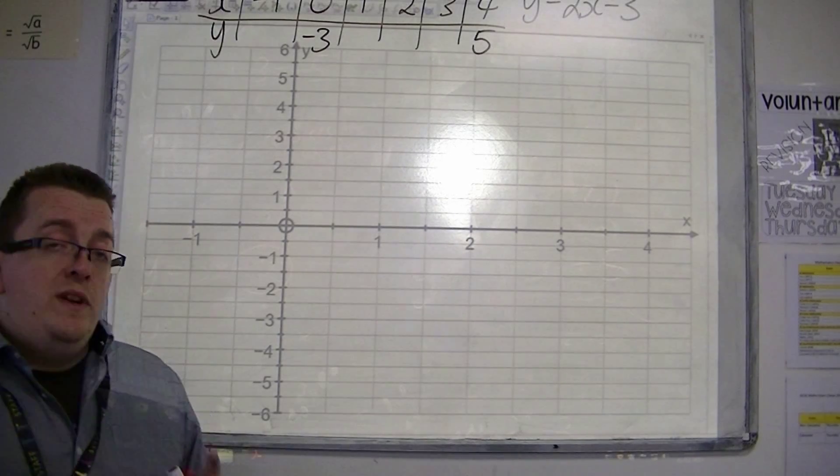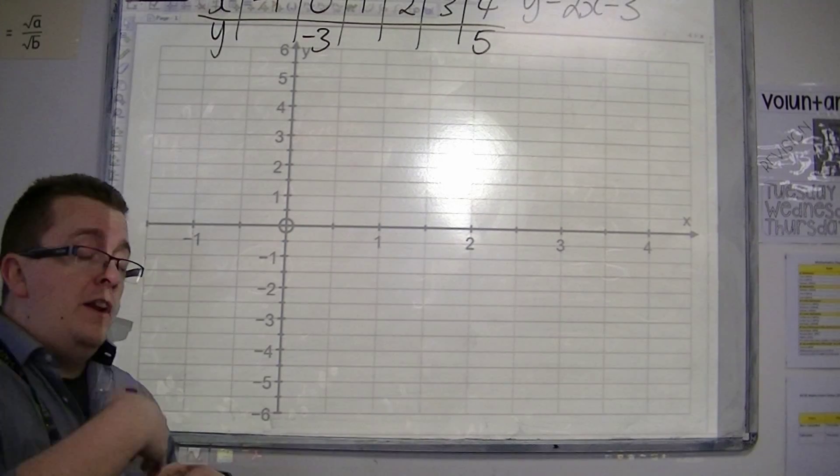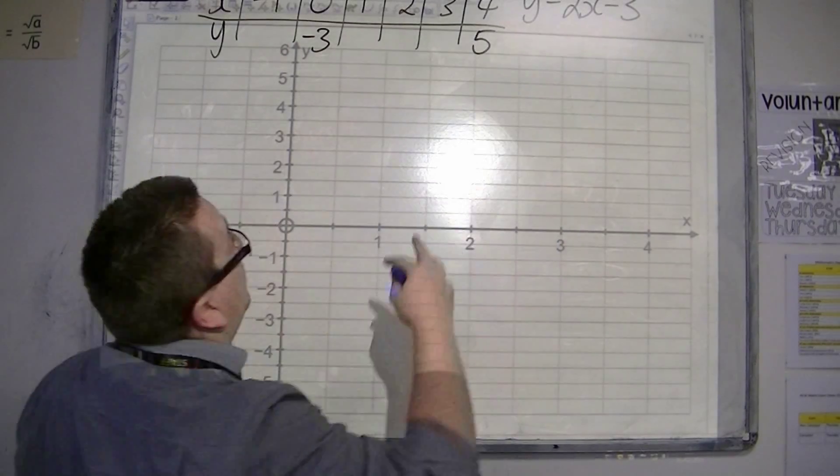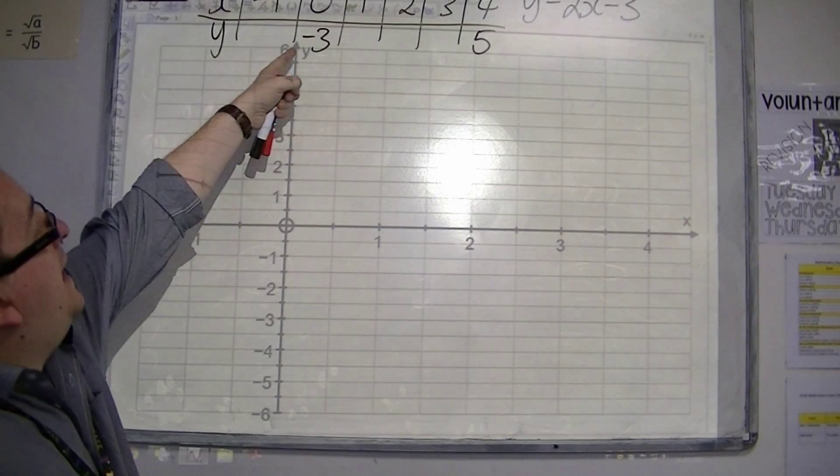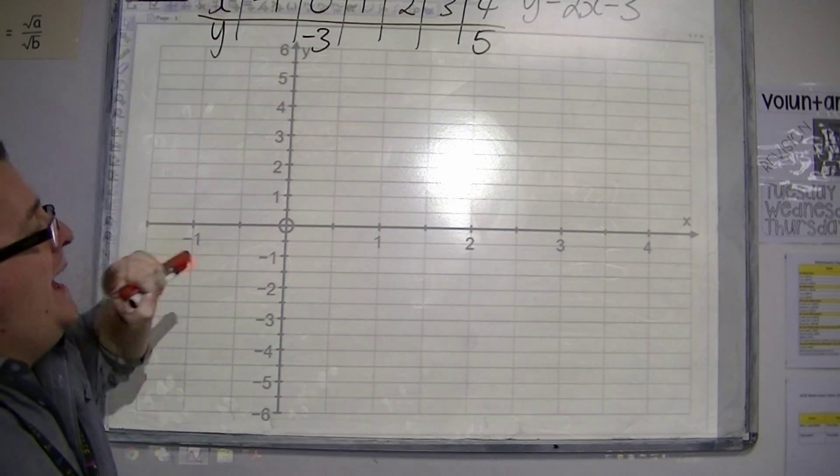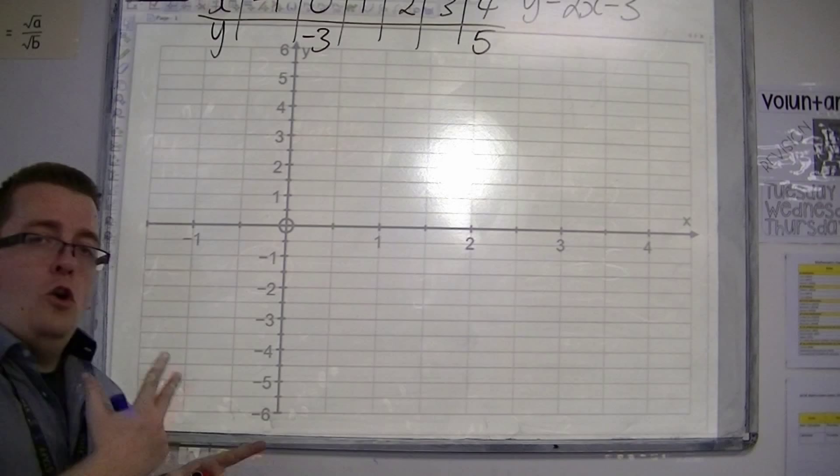The type of question that we're now going to be looking at is, given an equation, so like this one, y equals 2x minus 3, can we then fill in the gaps in the table and then plot the line on the graph?